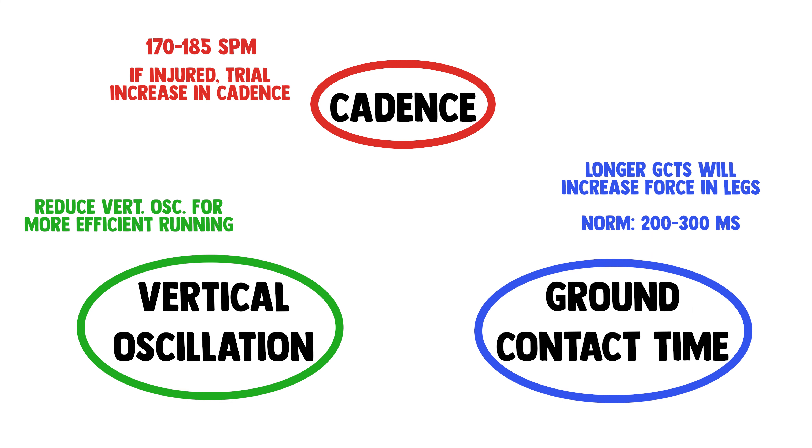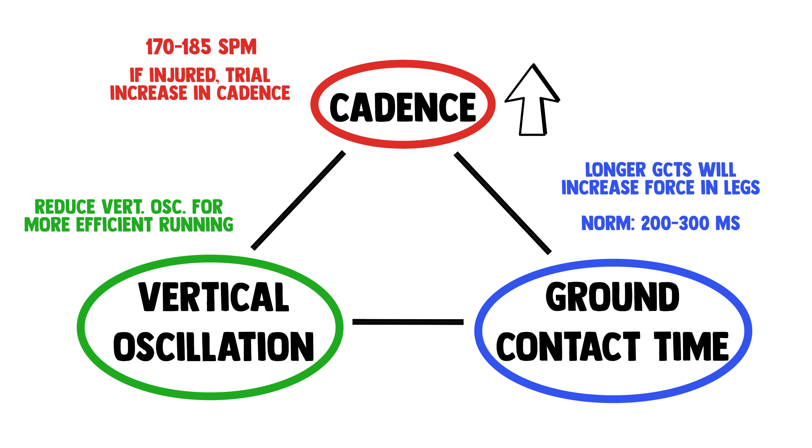It's important to remember that cadence, vertical oscillation, and ground contact time are all interlinked — you usually can't change one in isolation. As you change one, the others will change as well. This is useful to know because small tweaks to your running technique will create changes across all of these measurements.